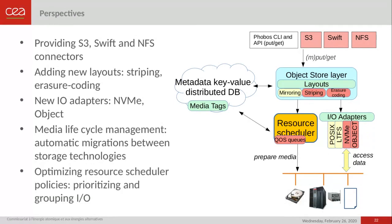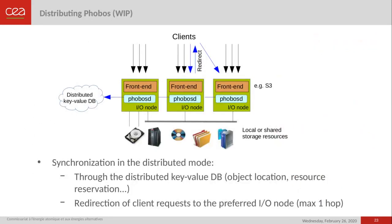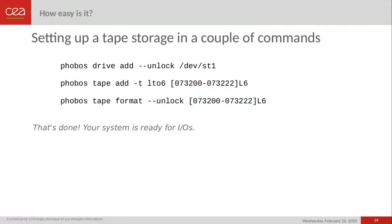We continue to optimize resource scheduling, especially for prioritizing and grouping IO operations. We also plan to offer distributed and scalable deployments for Phobos, leveraging the distributed key-value database to synchronize and route client requests to different IO nodes, each hosting a Phobos daemon requesting resources from the scheduler. Setting up a tape storage with Phobos is as easy as a couple of commands — adding drives, adding and formatting tapes — and that's it, ready to use.